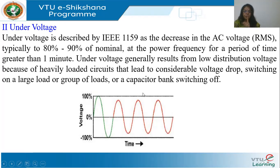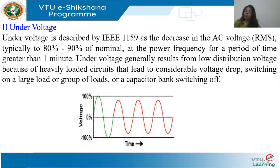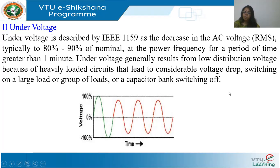Switching off a capacitor can also cause under voltage, since capacitors are used to improve the voltage profile. For example, capacitors switched off during light load in the morning may not be switched back on as the load picks up, resulting in under voltage. These are all steady-state phenomena described in terms of RMS values, not amplitude.